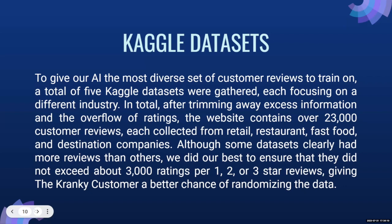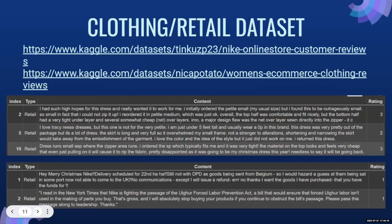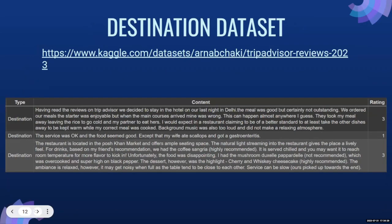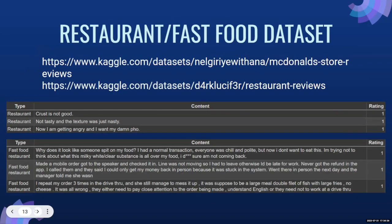As an example, we have our clothing and retail dataset. As mentioned in our previous presentations, we were able to narrow down all the datasets into just three columns: type, content, and rating. Here's a sample review — and we did the same with the destination dataset, and then the same with restaurant and fast food.